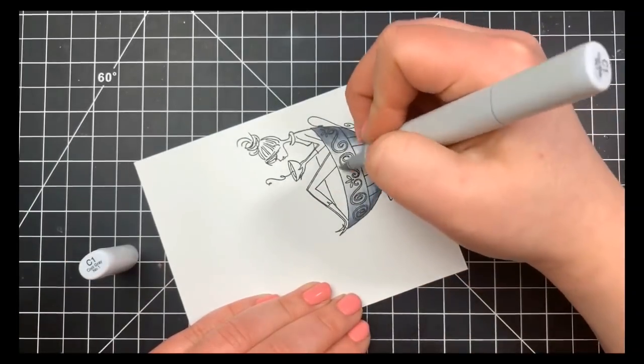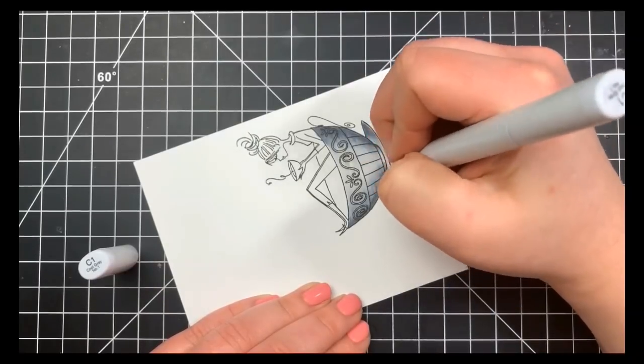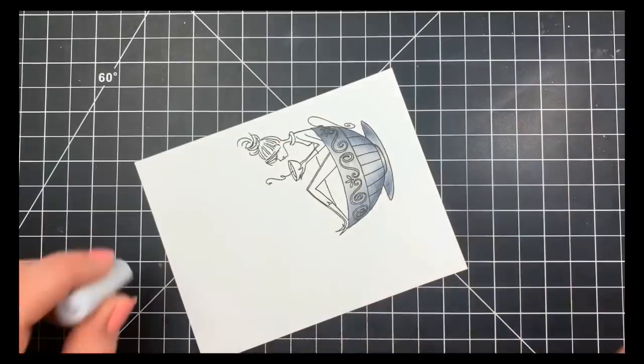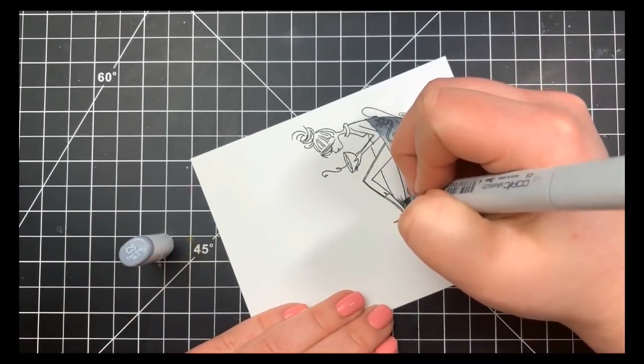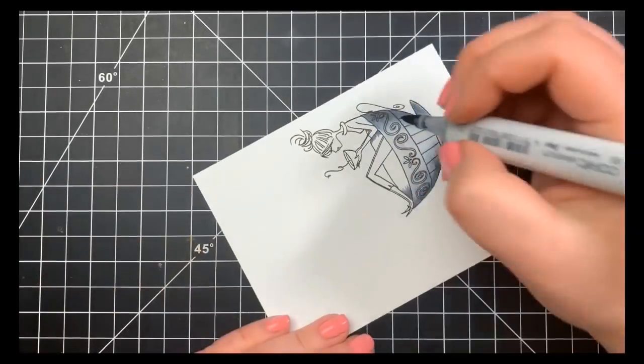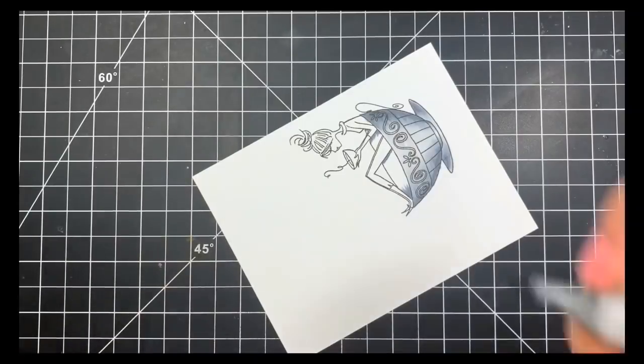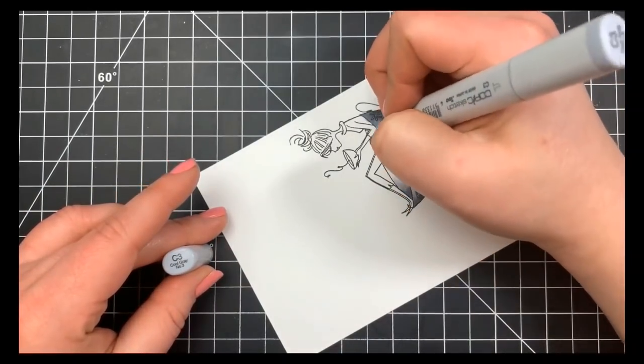Then extending that out with the C3 and then finally the C1. I am leaving just a little bit of white in the center, not that it will matter too much once we have everything colored. I'm also going to add some shading on the inside of the cup as well, and where her leg is that would also create a shadow. So I'm just putting a little bit of a shadow there with that same C5, C3, and C1.